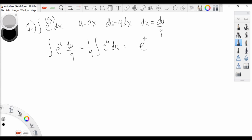Now plugging back in for u, we have 1 over 9 e to the 9x plus c, and that is our final answer. Now we're going to move on to number two.